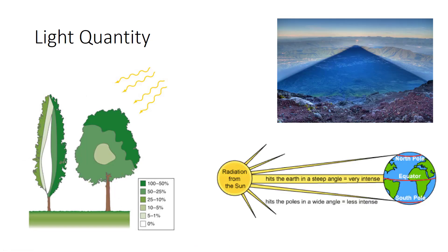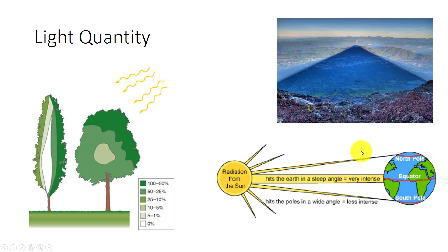Quantity of sunlight refers to light intensity or brightness. More light is available for photosynthesis on a clear than on a cloudy day. Understory plants receive dim light, and lower branches on the shaded side of a plant receive less light. Plants growing in the shadow of a mountain or deep in canyons receive much less light than plants that grow on the slopes that face the sun. Plants near the equator receive intense light because the sun is always more or less directly overhead at noon, whereas plants near the poles receive very little light.